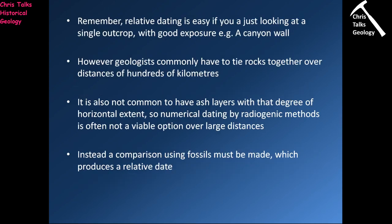Relative dating is easy if you just look at a single outcrop. With good exposure like a canyon wall it's quite straightforward — the oldest rock will be at the bottom, the youngest at the top, and cross-cutting relationships and unconformities will be relatively clear in a vertical section. However, geologists also have to commonly tie together rocks over large distances, sometimes hundreds or even thousands of kilometers.